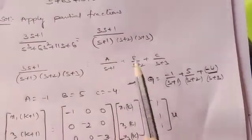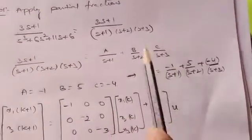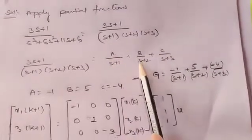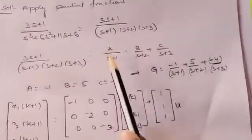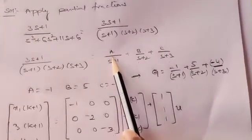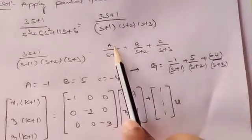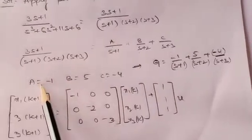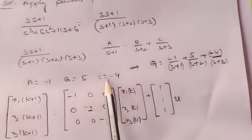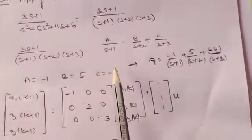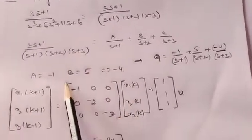After applying partial fractions, you need to find out the values of A, B, and C. You have already done many problems using partial fractions. After doing the partial fractions, the values are: A = −1, B = 5, C = −4. I am directly showing you the values after partial fraction has been done.